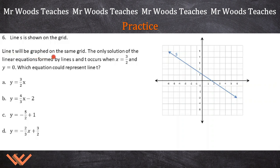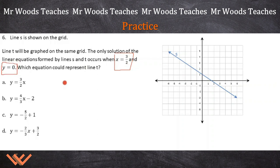Let's look at number 6. Line t will be graphed on the same grid. The only solution of the linear equations formed by lines s and t occurs when x is equal to 3 halves and y is equal to 0. Which equation could represent line t? We don't have to graph line t. We have x equal to 3 halves and y equal to 0 — that's the solution for both of them, and this is the x-intercept. When x is equal to 3 halves for s, y is definitely 0.